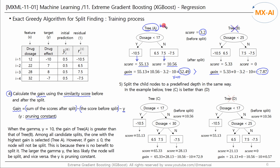This is the better split. In this way, the tree with the highest gain is selected among all split candidates. However, if the gain is less than zero, this node will not be split because there is no benefit from the split. The gamma controls whether a node is split or pruned — the larger the gamma, the less likely it is that a node will split, so gamma acts as a pruner.